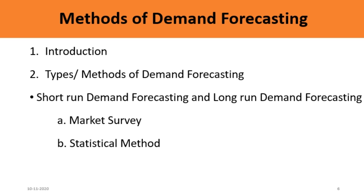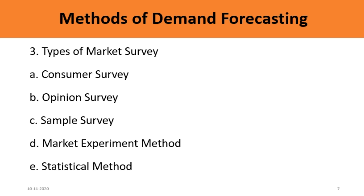The second method we considered briefly is the statistical method. When we get information from a market survey, that information should be analyzed, and after analyzing the market information, we can statistically prove the demand forecasting using methods such as percentage, curve, and graphical method. Statistical methods are more accurate than the market survey method. Today we are going to consider how a market survey should be conducted and what its importance is.